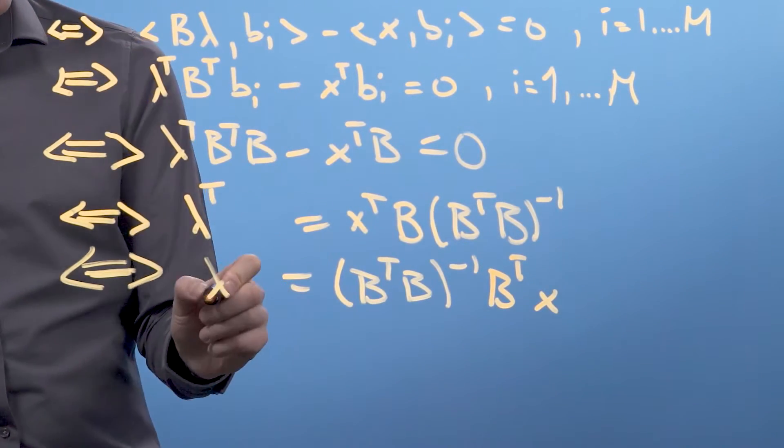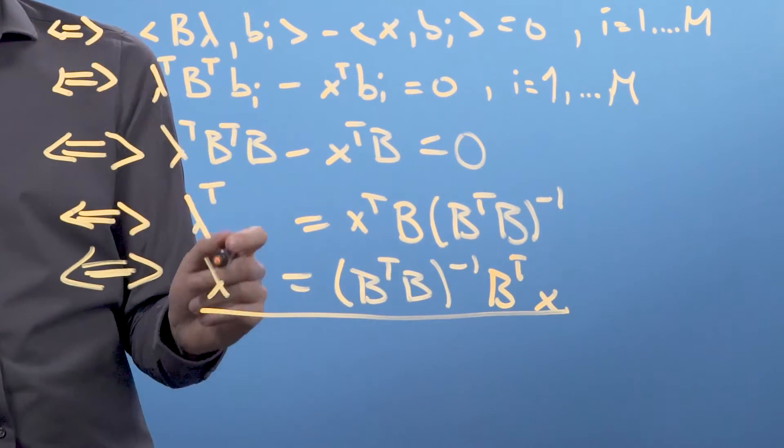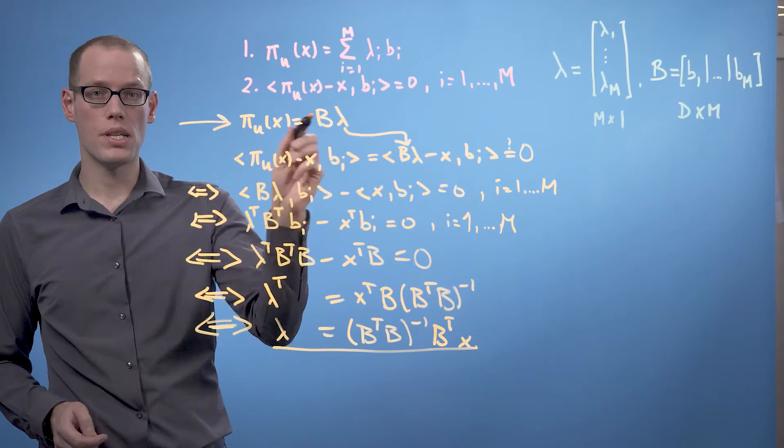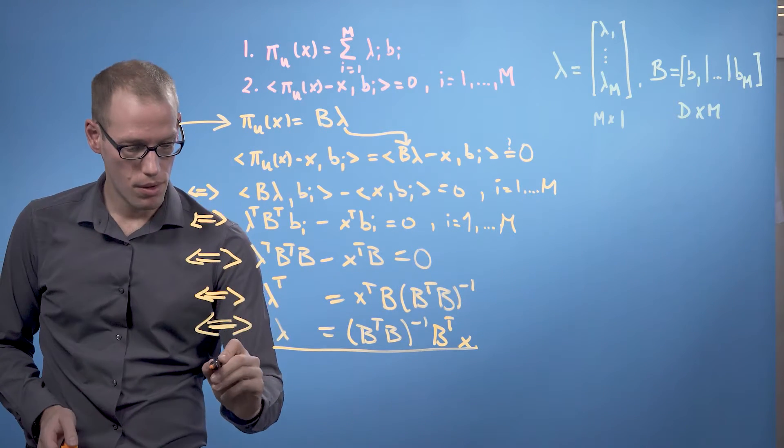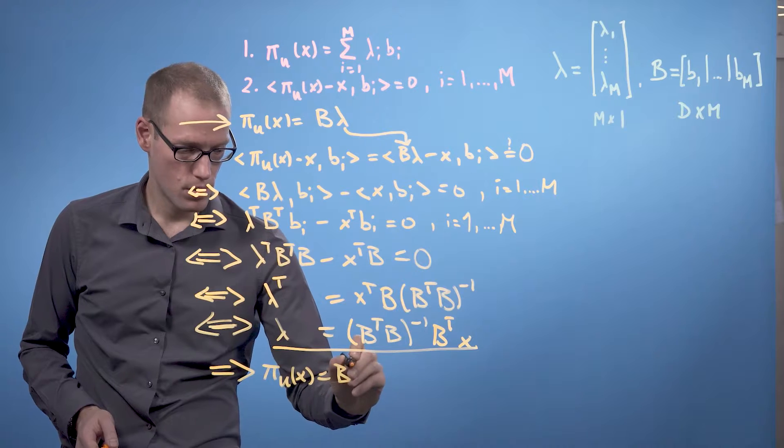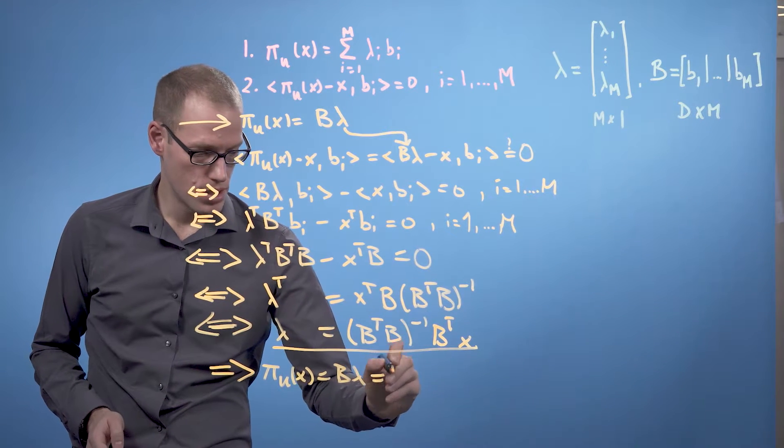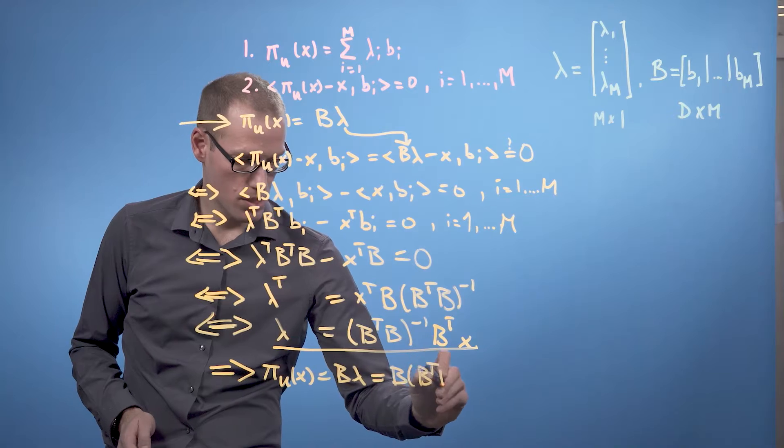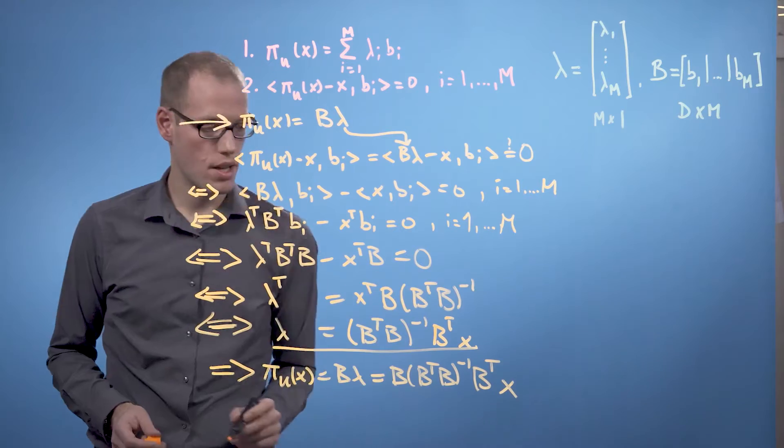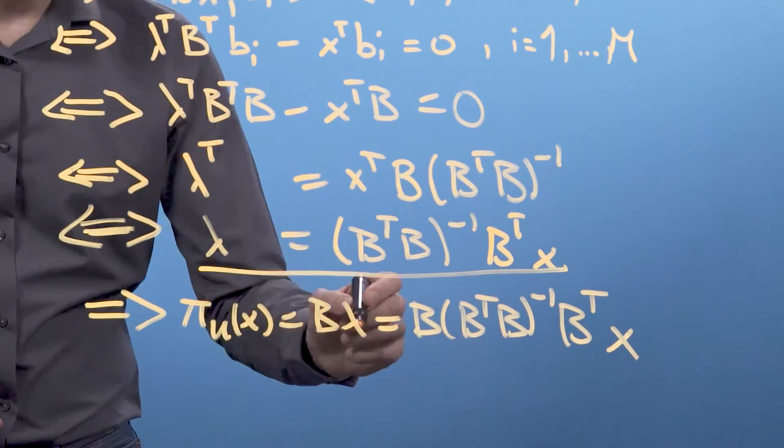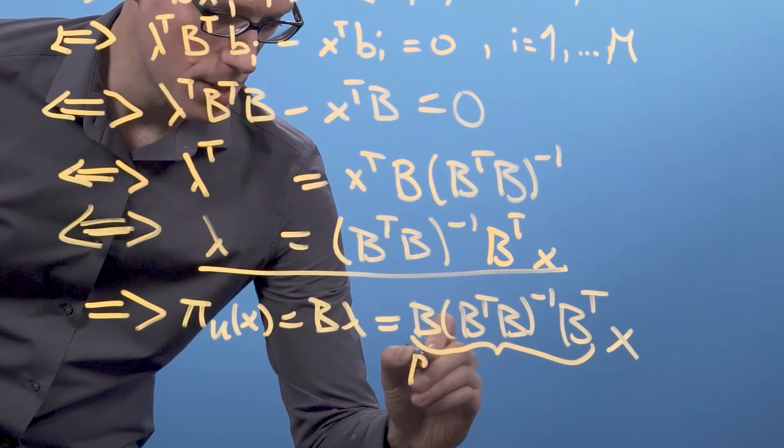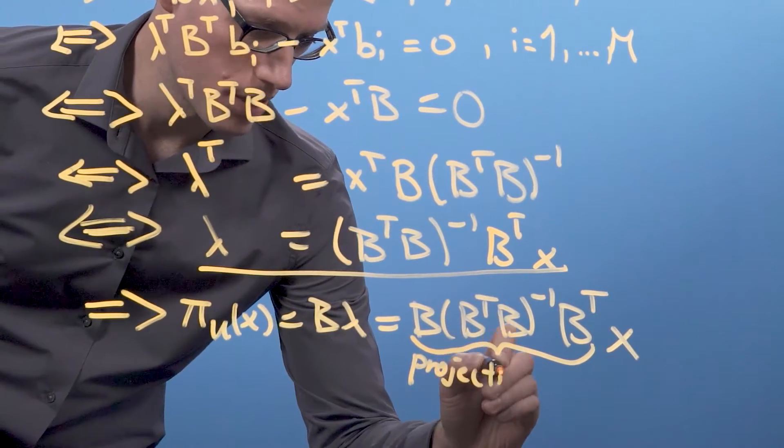So now we have identified λ to be this, but we also know that our projection point can be written as B times λ. So this means we will get π_u(x) as B times λ, which is B times (B^T B)^{-1} times B^T x. We can now identify this expression as the projection matrix, similar to the one-dimensional case.